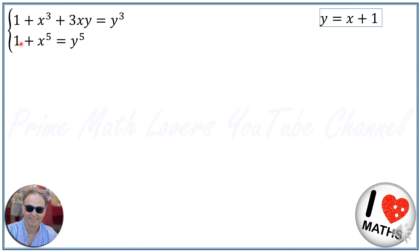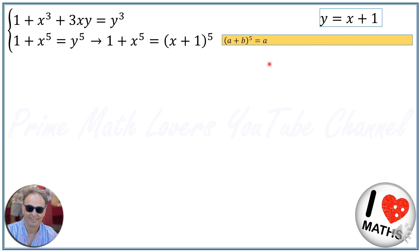From the second equation, replacing y with x plus 1, we obtain 1 plus x to the power of 5 equals (x plus 1) to the power of 5. Applying the binomial expansion formula, (a plus b) to the power of 5 equals a to the 5th plus 5a⁴b plus 10a³b² plus 10a²b³ plus 5ab⁴ plus b to the 5th.